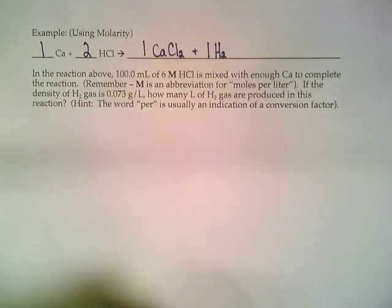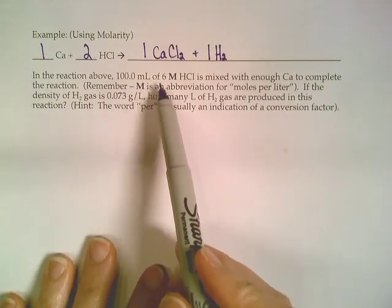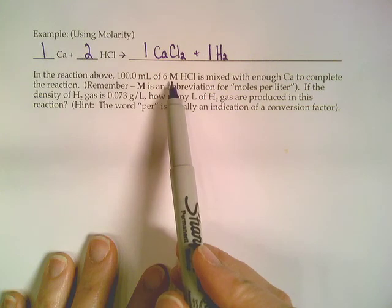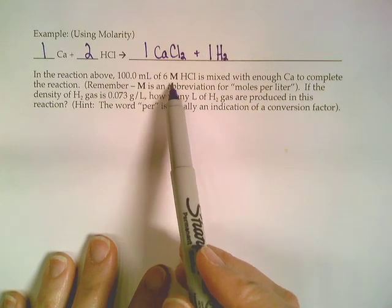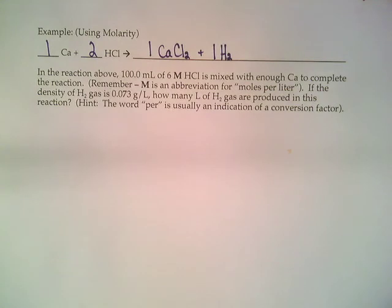Now that we have that part down, let's read what it's asking us. It tells us we've got 100 milliliters of 6 capital M—the way you'd read that out loud is molar, six molar—hydrochloric acid is mixed with enough calcium to complete the reaction.